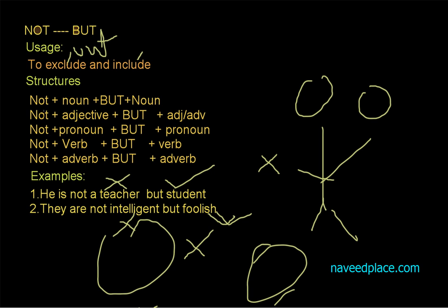Now let us see the structures. The structures here are: not plus noun but noun, not adjective but adjective, not pronoun but pronoun, not verb but verb, not adverb but adverb.